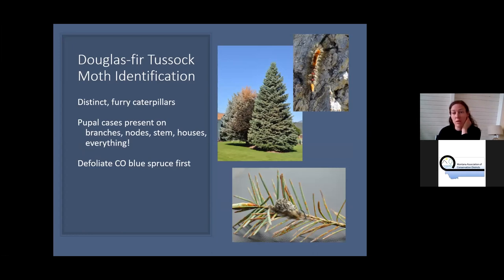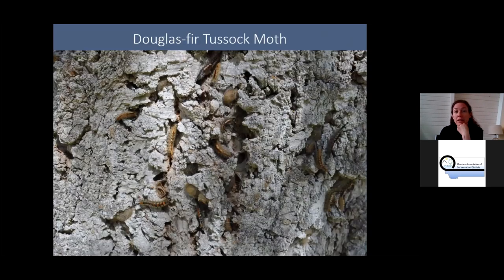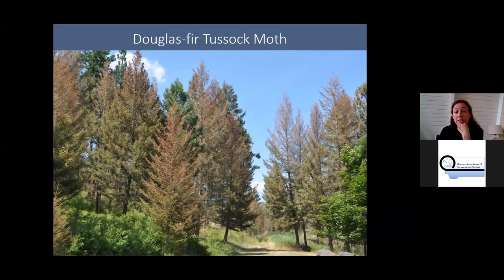You'll see egg masses everywhere — on branch crooks, the main stem, houses, lawn furniture, everything. They typically defoliate planted Colorado blue spruce in ornamental settings the year prior to seeing activity in the wider forest — we use that as a canary in the coal mine. Sometimes you'll see tussock moth, spruce budworm, and looper all in the same tree. The impact can be pretty intense defoliation. If you see a green Doug fir that's not defoliated at all, that's a good indication the tree has some sort of resistance.